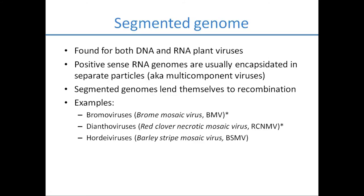Segmented genomes can be found in both DNA and RNA plant viruses. Positive-sense RNA genomes are usually encapsidated in separate particles and are also known as multi-component viruses. Segmented genomes allow more recombination. For example, bromoviruses have four RNA components — RNA1, RNA2, RNA3, and a fourth subgenomic RNA. Dianthoviruses also show segmented genomes.